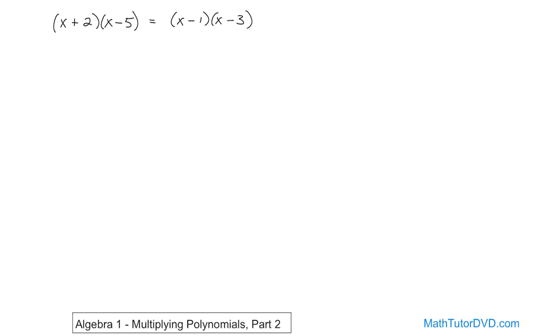So x times x gives you x squared. And then x times negative five gives you negative five x. And then two times x gives you two x. And then two times negative five gives you negative 10. And then you have an equal sign right here.